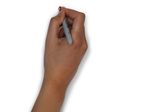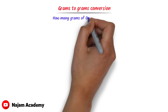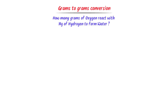Lastly, let me teach you grams-to-grams conversion. Consider this problem: how many grams of oxygen react with 10 grams of hydrogen gas to form H₂O? I write the complete balanced chemical equation: H₂ + O₂ → H₂O, with coefficients 2, 1, and 2. The mass of hydrogen gas given is 10 grams; I need to find the mass of oxygen gas.